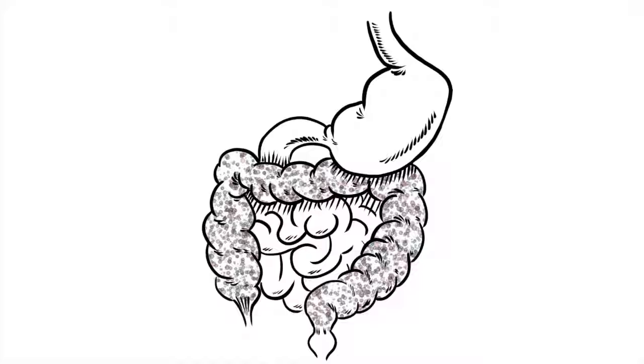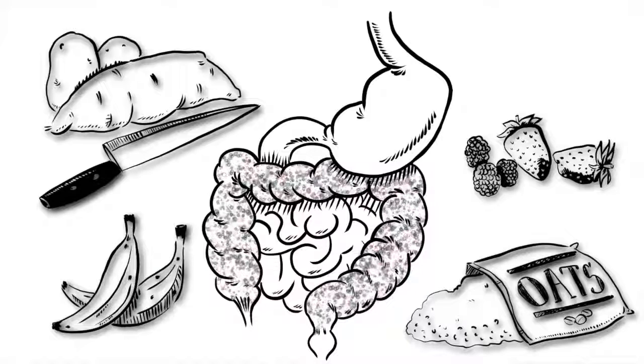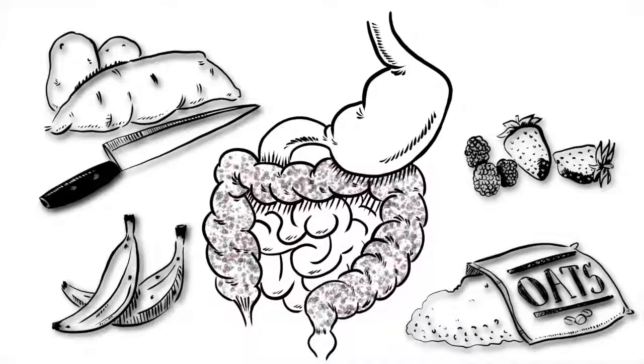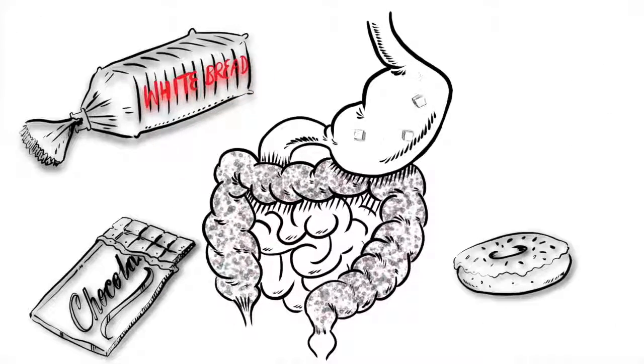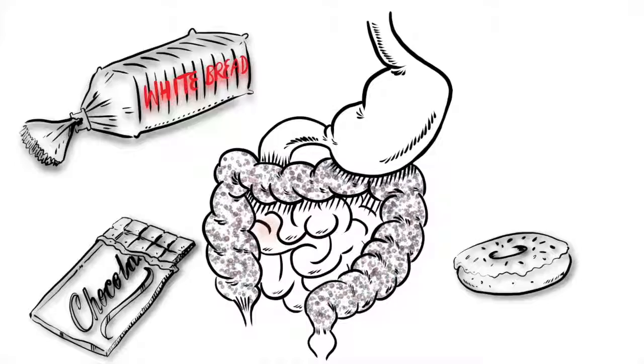And what a healthy microbiota needs are fiber-rich, complex carbohydrates. Simple sugars, found in refined carbohydrates, tend to be absorbed quickly and don't reach the colon for the microorganisms to feast on.